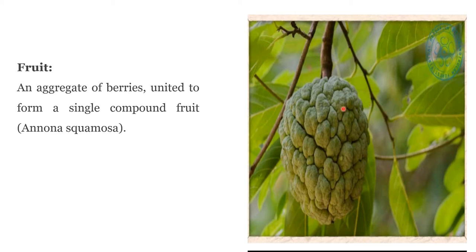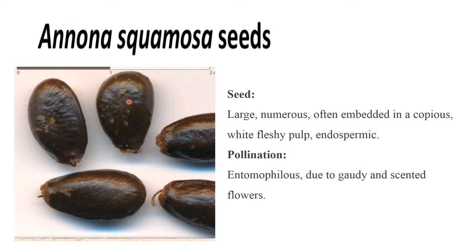Fruit is an aggregate of berries united to form a single compound fruit. An example is Annona squamosa. Seeds are large, numerous, often embedded in a copious white fleshy pulp, as seen in Annona squamosa seeds, and the seed is endospermic. Pollination is through entomophily due to gaudy and scented flowers.